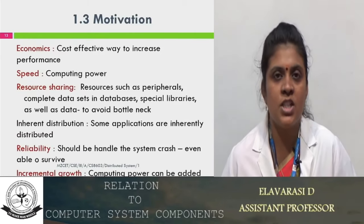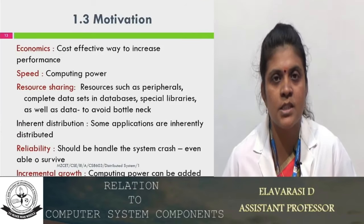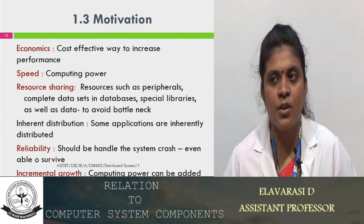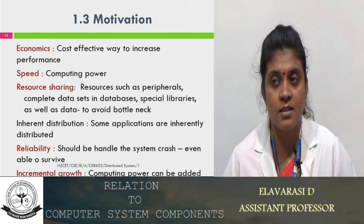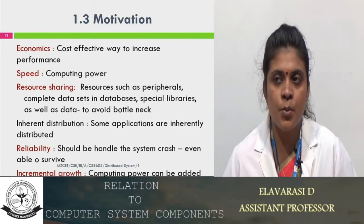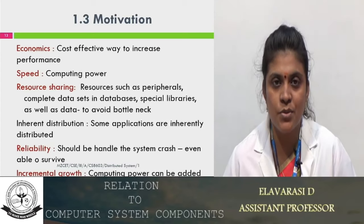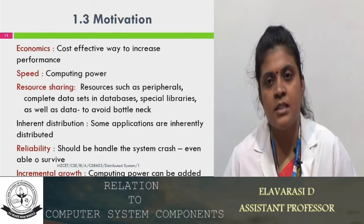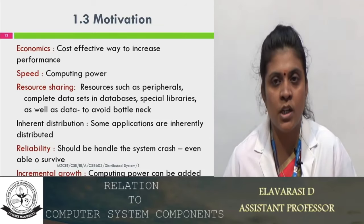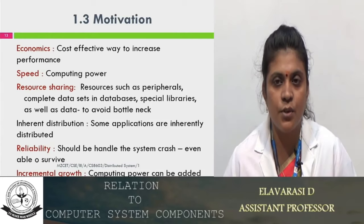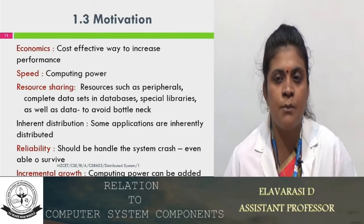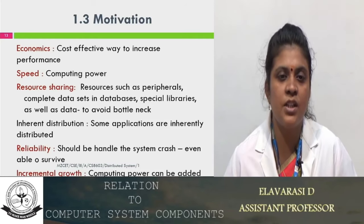The other motivations include performance cost ratio and economics — the cost-effective way to increase the performance and speed. It increases computing power because we can utilize underutilized systems. We have some supercomputers which were underutilized — we can find those resources and utilize them. Resource sharing allows us to share peripherals, data sets, databases, and special libraries. This avoids bottlenecks in resource sharing. Inherently distributed means placed in different geographical locations, and reliability ensures the system is able to survive even a system crash.